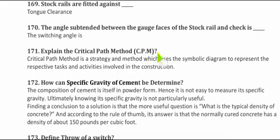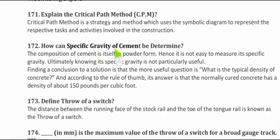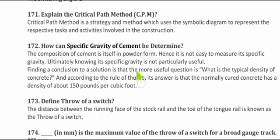Question 171: The Critical Path Method (CPM) was already discussed in the previous video. Question 172: How can the specific gravity of cement be determined? Since cement is in powder form, measuring its specific gravity is not straightforward. The more useful question is: what is the typical density of concrete? According to the rule of thumb, normally cured concrete has a density of approximately 150 pounds per cubic foot.